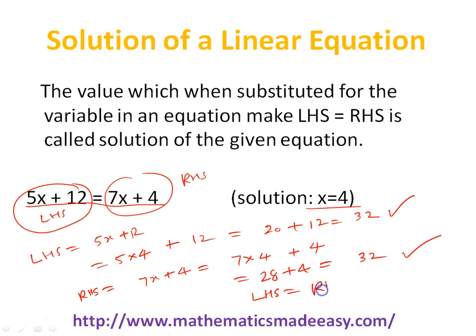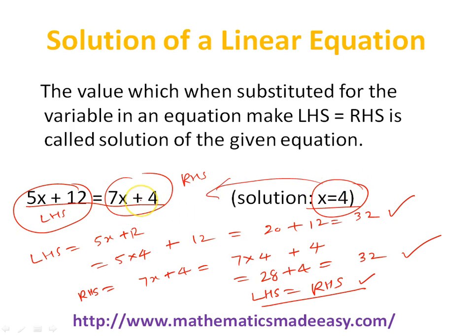We got left hand side equal to right hand side when we put x equal to 4. So x equal to 4 is the solution of this equation. The value which can be substituted for the variable in the equation which makes the left hand side and right hand side equal — that particular value of the variable is called the solution of the linear equation.